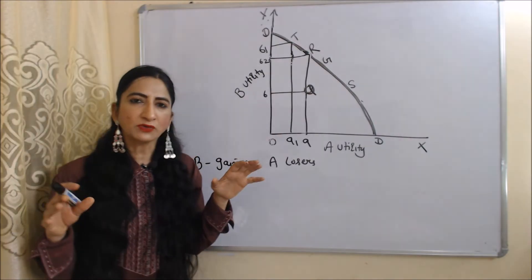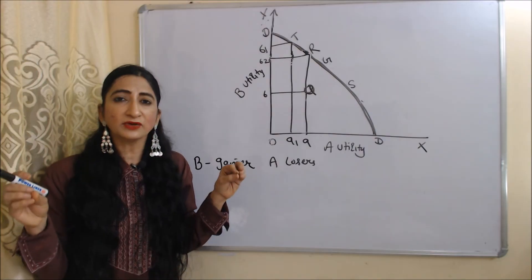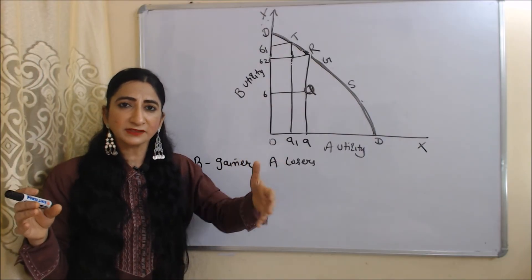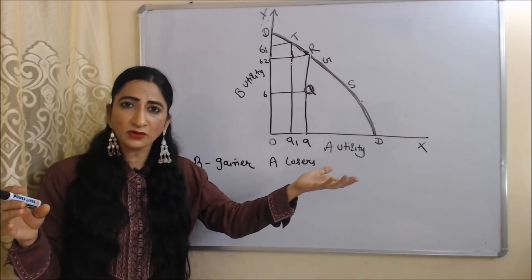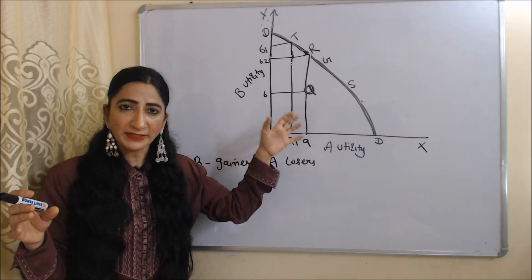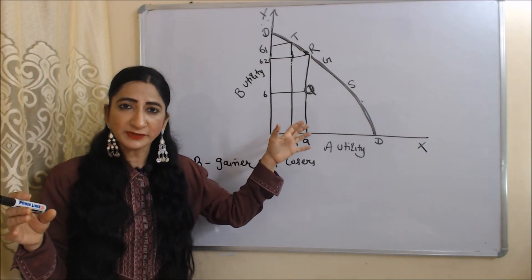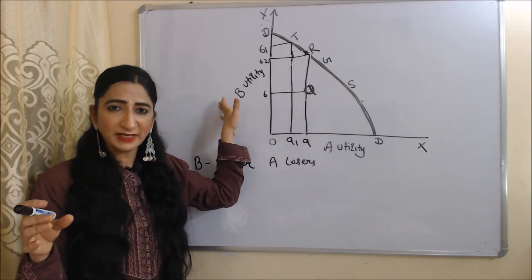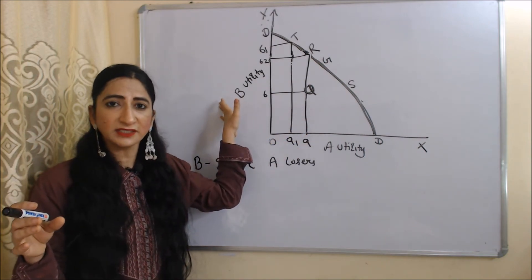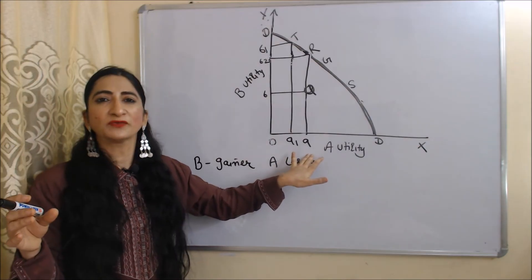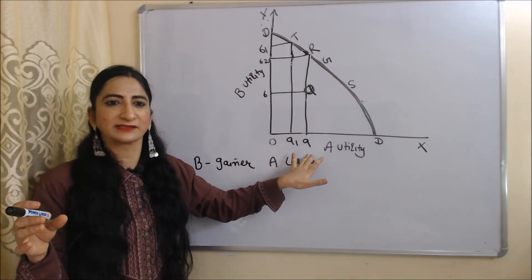According to Pareto optimality, we cannot increase the benefit of one person without making a loss for any other person. But according to the Kaldor-Hicks principle, we can increase the benefit of one person without making a net loss for any other person.